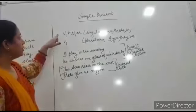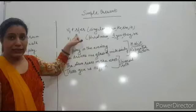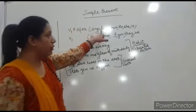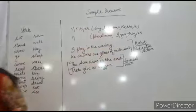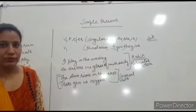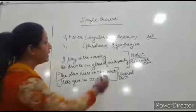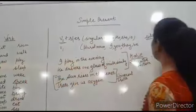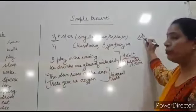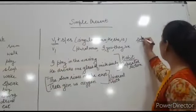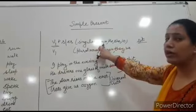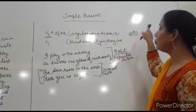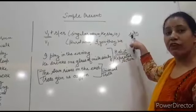We use V1 plus S/ES. When we use S/ES with V1: when singular noun or he, she, it is there. V1 means first form of the verb. If we are using it with singular noun, then we use sit, not only sit, we add S or ES with the first form.